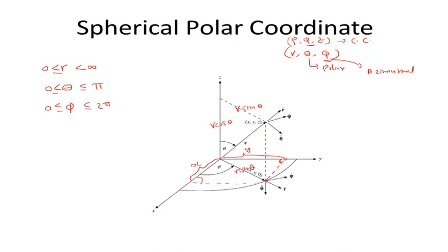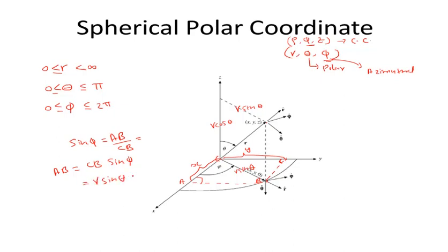Now if this side is r sin theta, then considering sin phi as opposite side by hypotenuse, naming the triangle vertices A, B, and C: sin phi equals AB divided by CB, where CB is r sin theta. So AB equals r sin theta sin phi. And AB equals y. Therefore, y is equal to r sin theta sin phi.